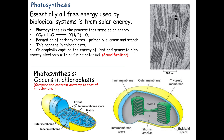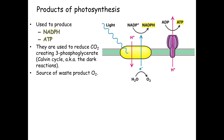The important membrane here is the thylakoid membrane. It separates the thylakoid space, which is inside, from the stroma, which is outside. That's the area we're going to focus on. So what do we do in photosynthesis? We said we're going to take photons of light as our energy source. It's going to oxidize water — we extract electrons from water, turning it into the oxidized form, which is molecular oxygen, O2.